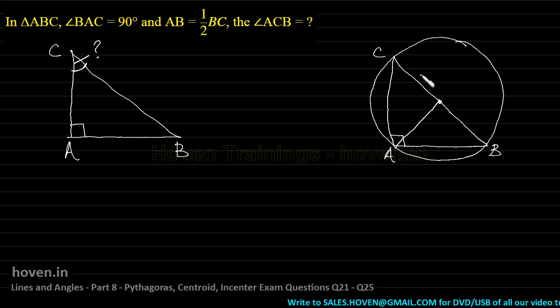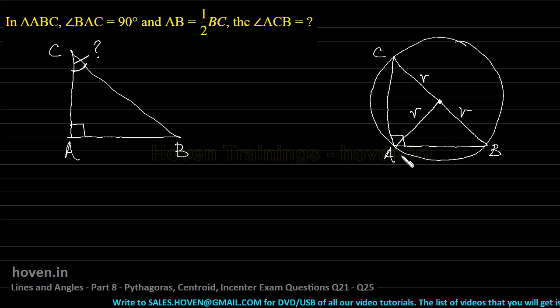If this is the radius R, this is the radius R, then this is also of radius R. Now, he says AB is half of BC.